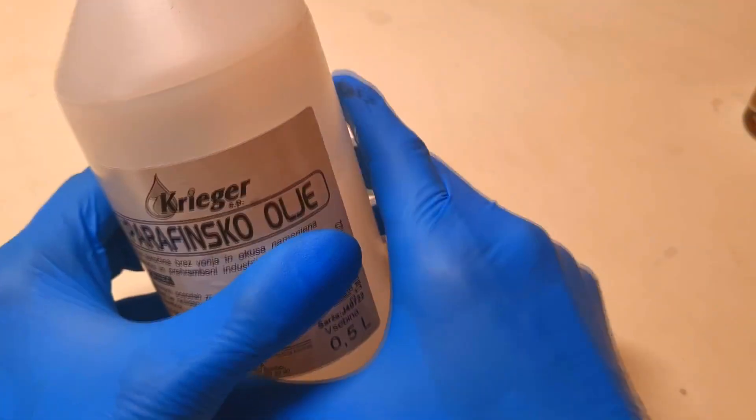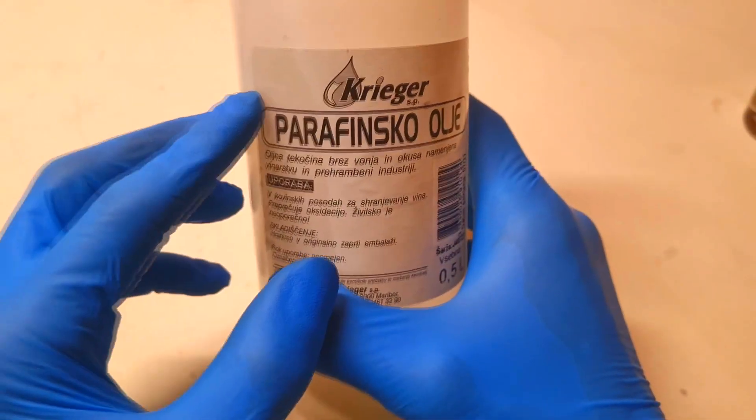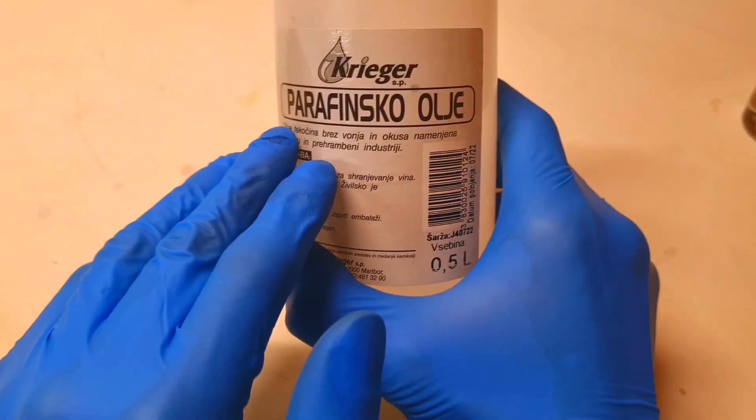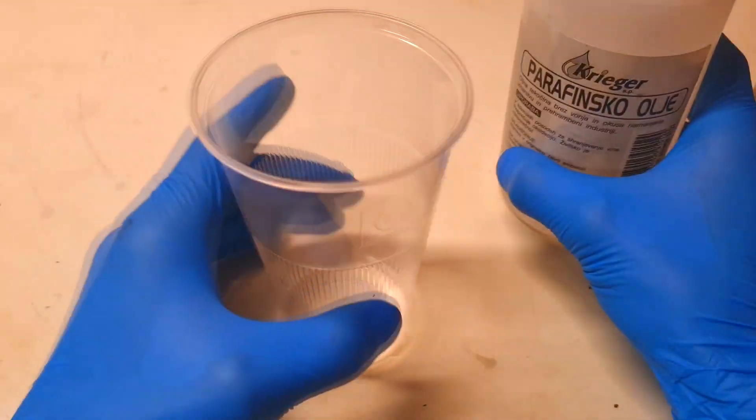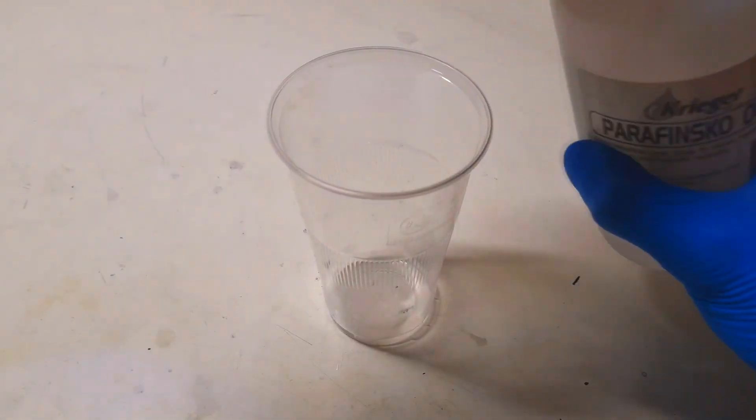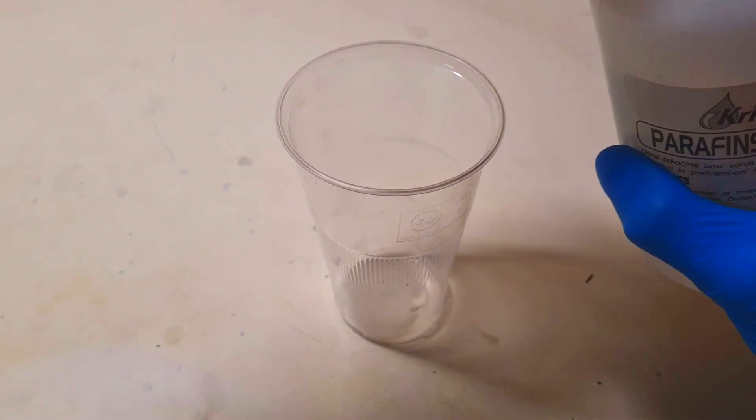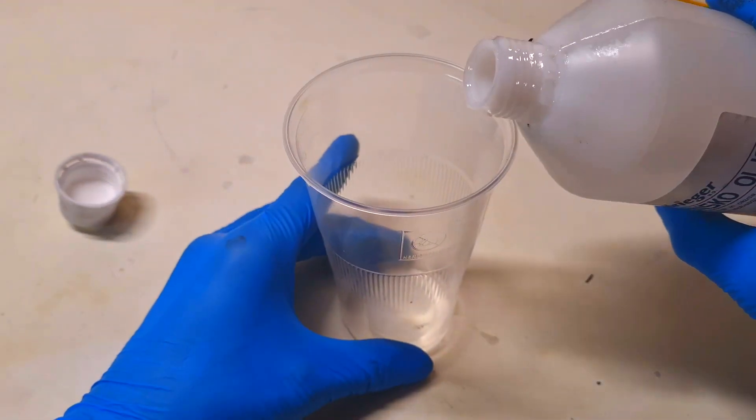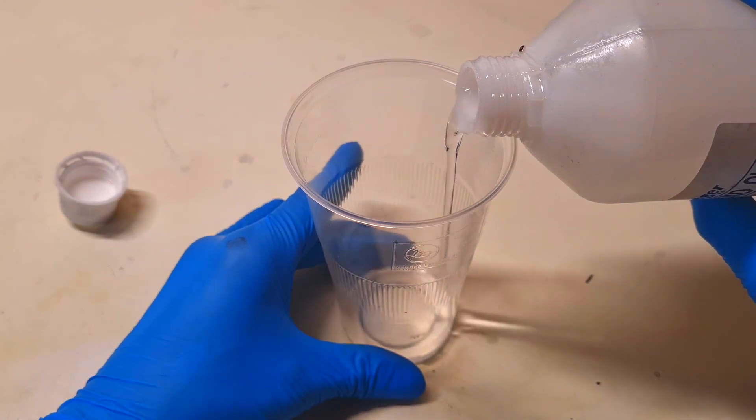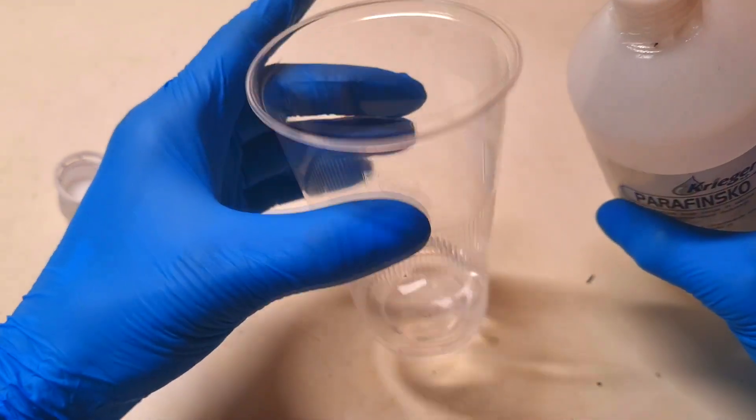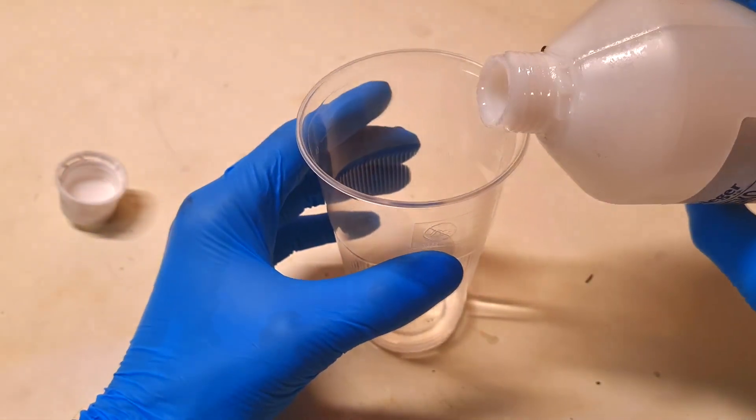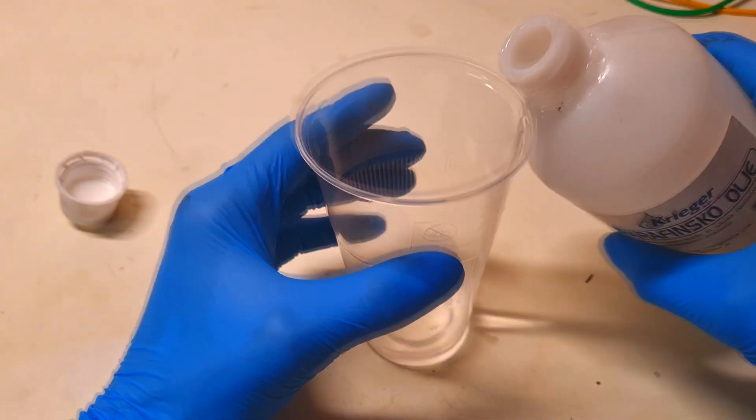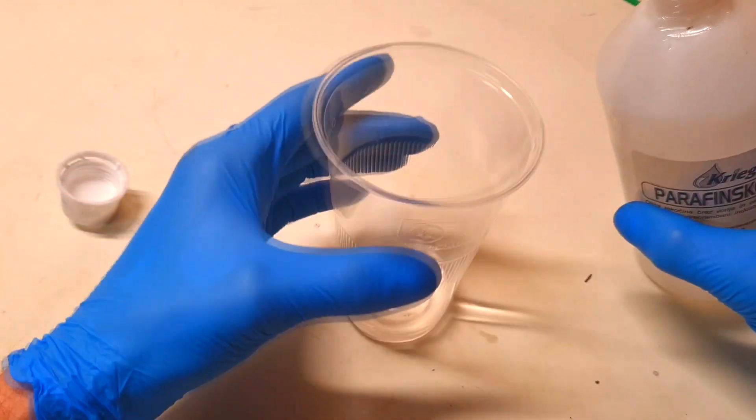But first, before I will assemble this kind of battery, I will make the cathode. And like I said, the cathode will be based on this paraffin oil. Here I have a cup. Into this cup I will put a little bit of paraffin oil. Like so, a little bit more. Okay, this will be great.